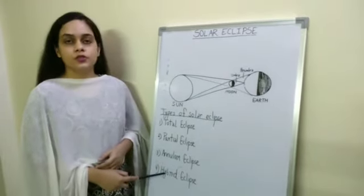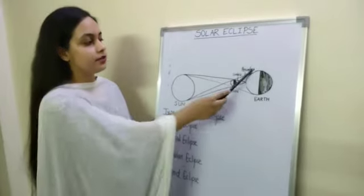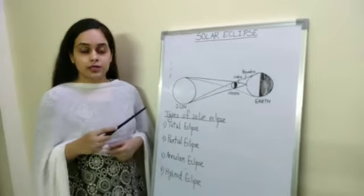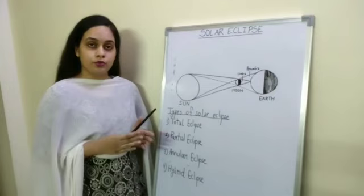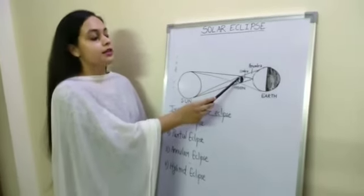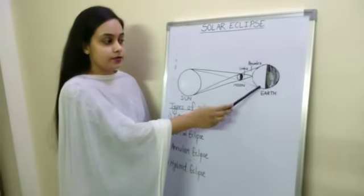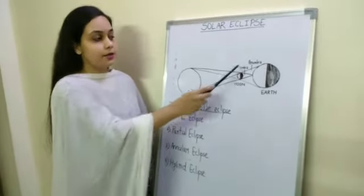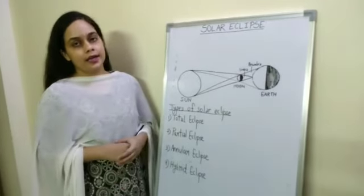A hybrid eclipse is caused due to two factors: the first one is the curvature of the curved surface of the earth, and secondly the elliptical orbit of the moon around the earth, because of which sometimes the moon is closer to the earth and sometimes it is far away. When the moon is nearer to the earth, some parts of the earth experience an annular eclipse, whereas when it is far away, some other parts experience a total eclipse — and this is known as a hybrid eclipse.